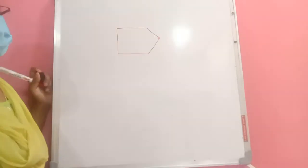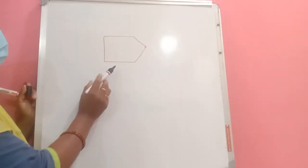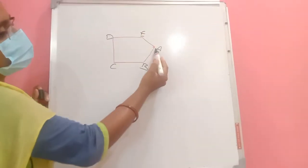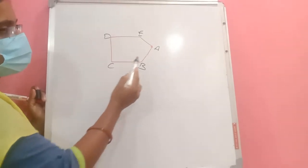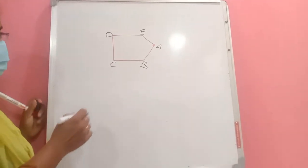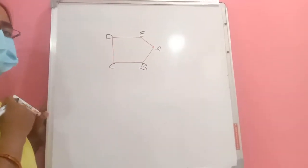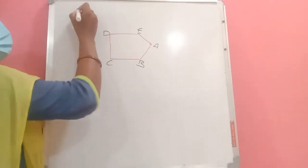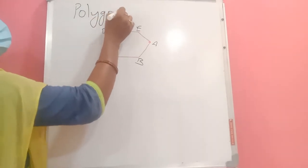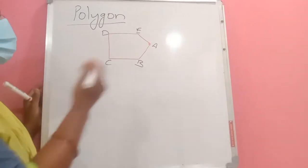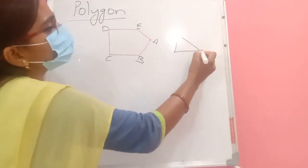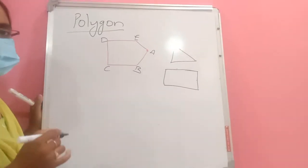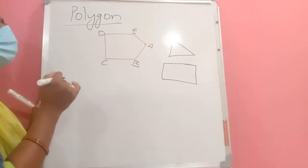If we have a closed figure made with line segments — like AB, AE, DE, DC, CB — all of these are line segments. If we have a closed figure with a finite number of line segments, we call it a polygon. Triangles, quadrilaterals, and other such closed figures are all examples of polygons.